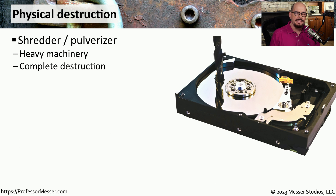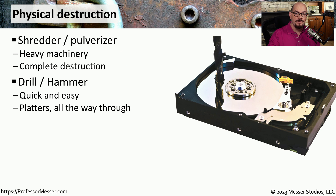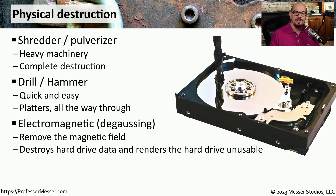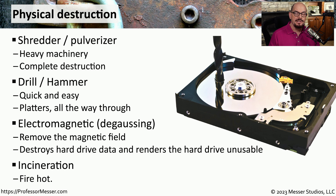If we want to guarantee that the data on a hard drive will never be seen again, we may want to physically destroy the drive. One way is by using a shredder or industrial pulverizer that will completely destroy the drive. If you only have a few drives, you can probably do this yourself with a drill or a hammer — once you put holes into the drive platters, there's no way to recover the data. You can also degauss the drive, which uses a strong electromagnetic field to delete all of the data and render the hard drive unusable. In some cases, an organization may choose to incinerate all of the storage drives, which will definitely ensure that no one would be able to use that drive again.